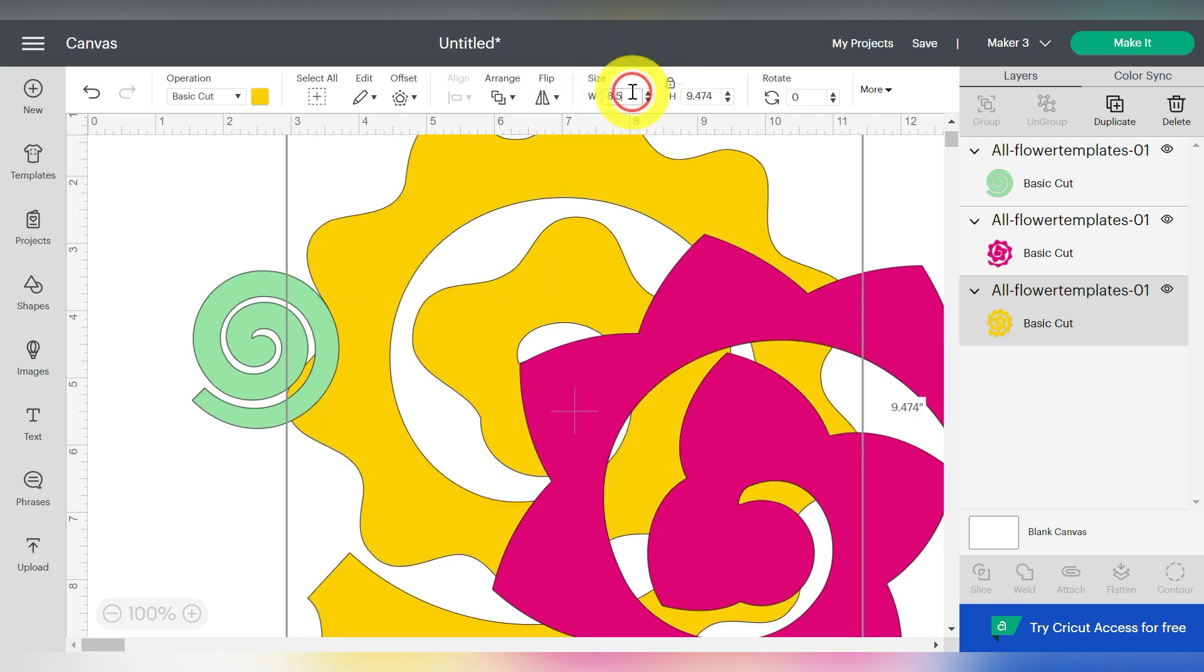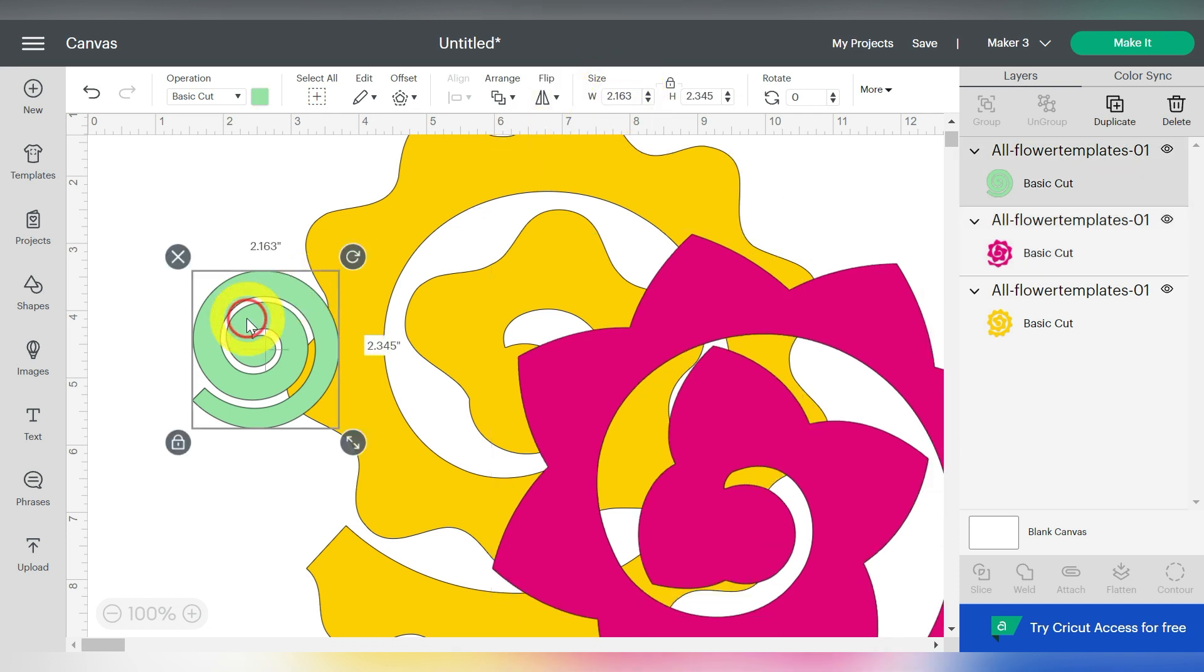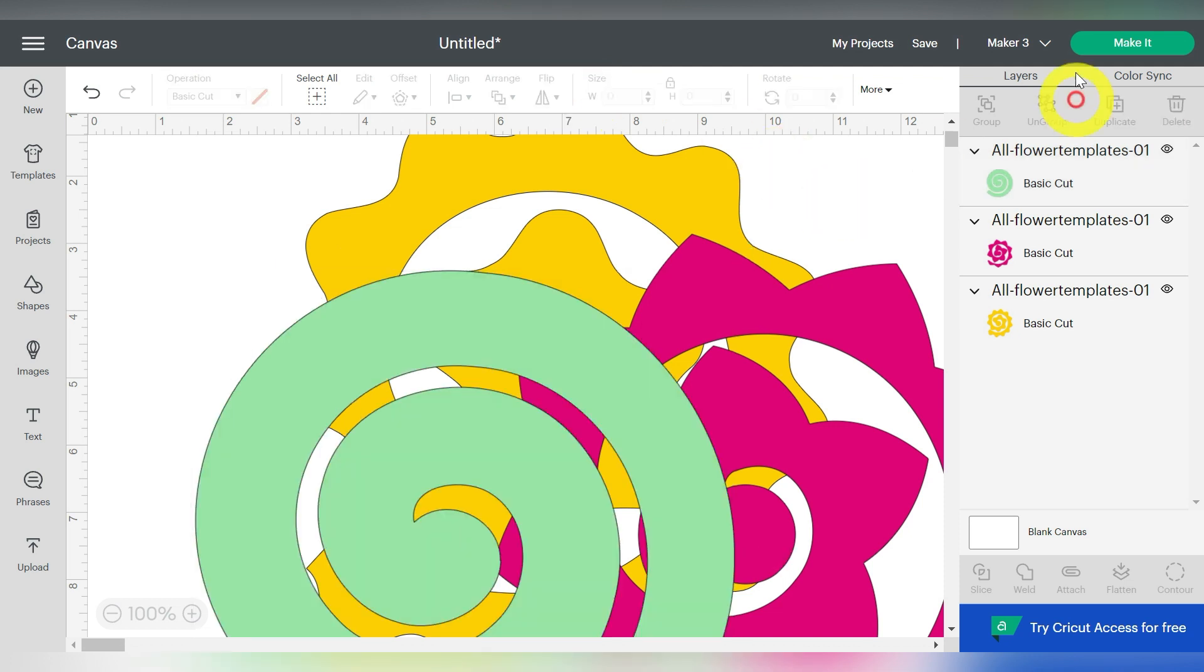So we will say 8 and a half. Actually, to be on the safe side, let's just do 8. We'll do an even 8. So I'm going to size those by just selecting them and typing them in up here, 8 inches wide.